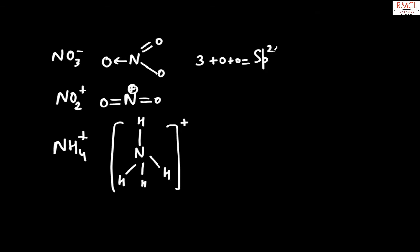Next, NO2+. In NO2+, the number of sigma bonds is two, no lone pairs are present, and no unpaired electrons. So the hybridization is sp.